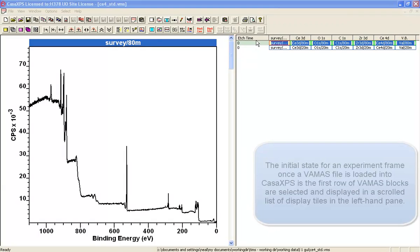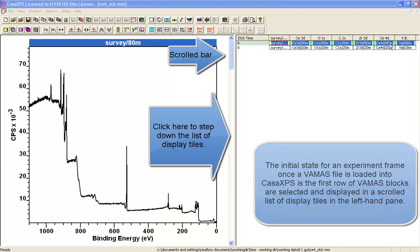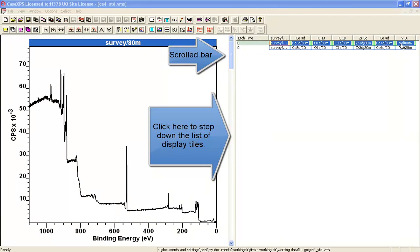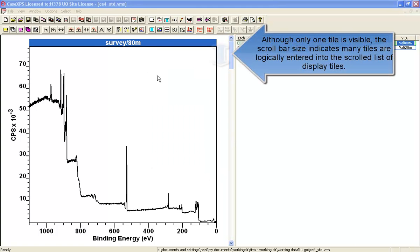When a VAMAS file is first opened, the first row is selected as indicated by the blue background to the block names, and each selected block is displayed in a scroll list on the left-hand side.